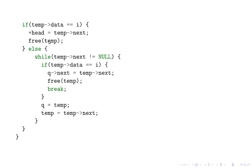Otherwise, if the first node is not the one to be deleted, then we check if temp->next is not equal to null and move forward, as we have done in iteration. This is our iteration statement. This loop will not execute for the first time because...